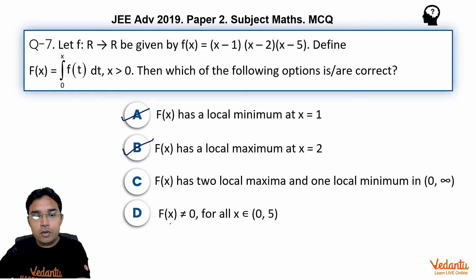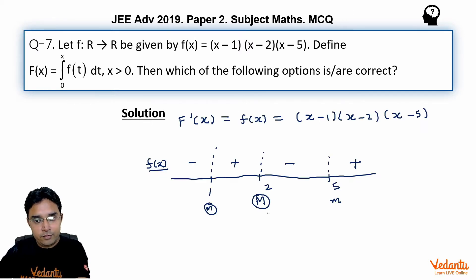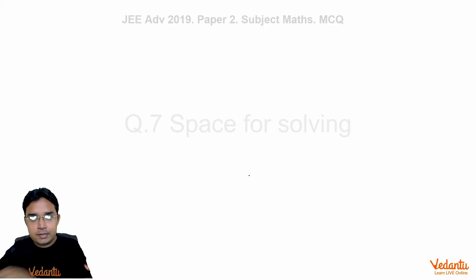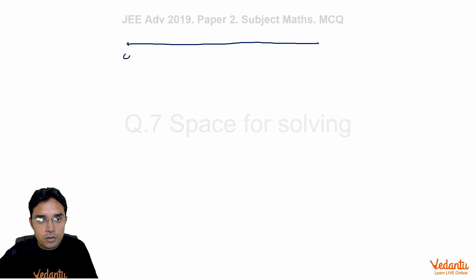Okay, now coming to part D. It says F(x) is not equal to zero for all x belongs to (0, 5). Now to understand this, let us make this graph once again.